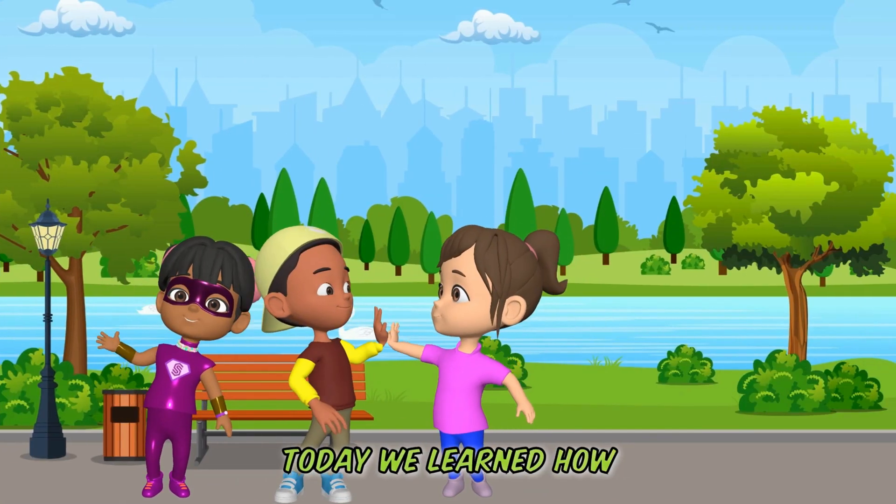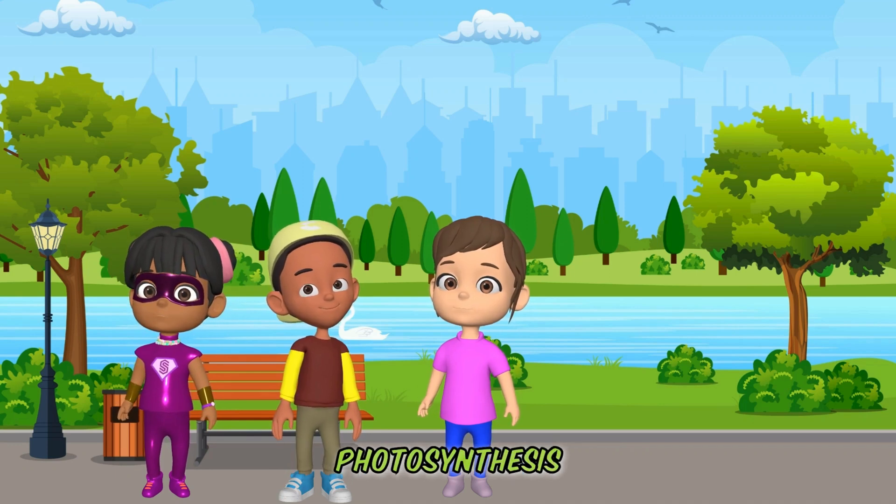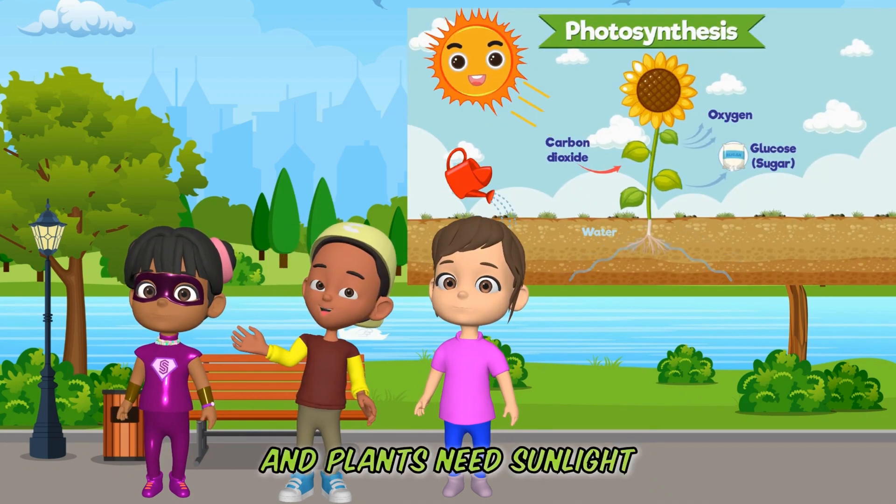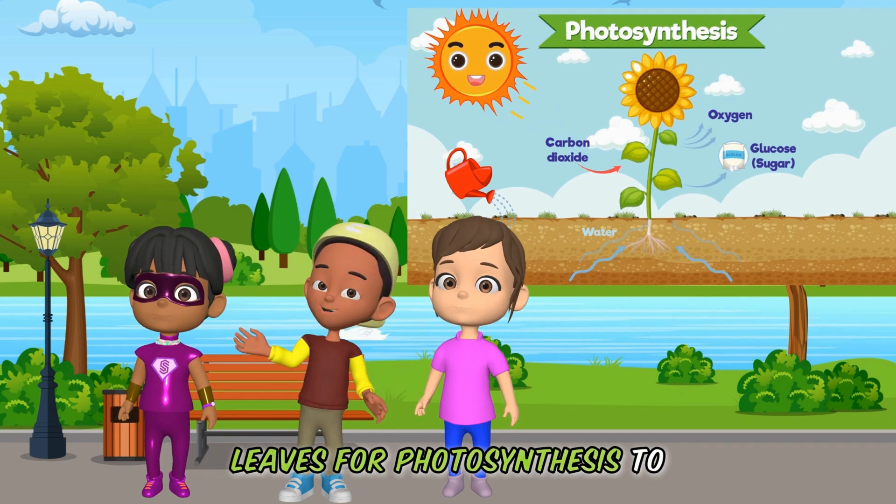Today we learned how plants make their food. The process is called photosynthesis. And plants need sunlight, carbon dioxide, water, and chlorophyll found in the leaves for photosynthesis to happen.